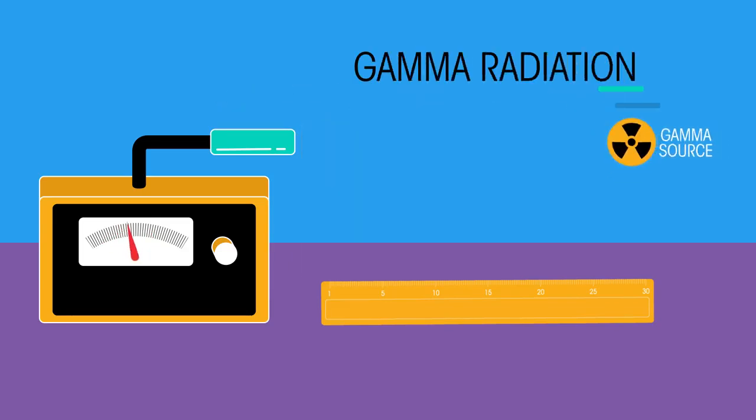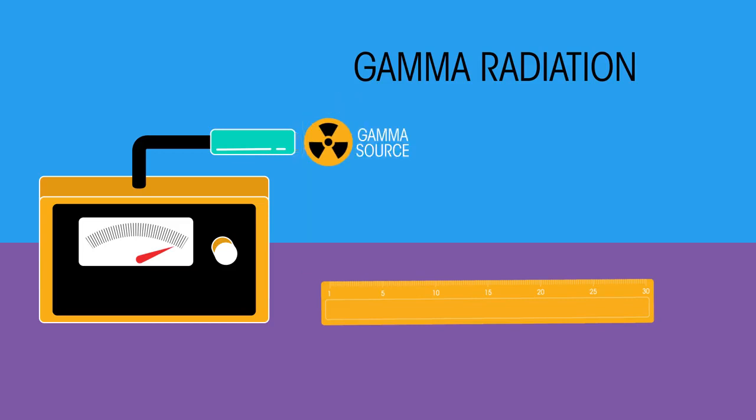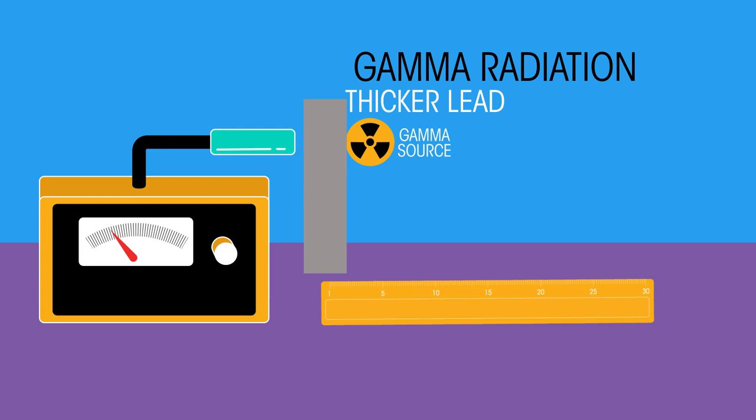And finally, gamma radiation. Aluminium has no effect. Thin lead some effect, and even thicker lead more so, but a significant count rate still continues. We can see that gamma rays have excellent penetration as they are neutral high-energy electromagnetic waves.